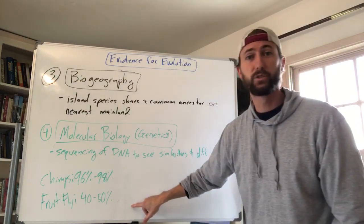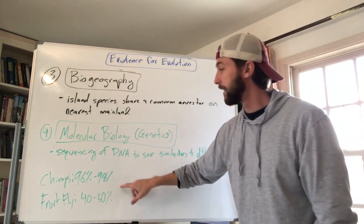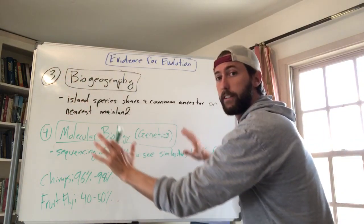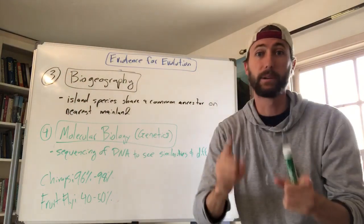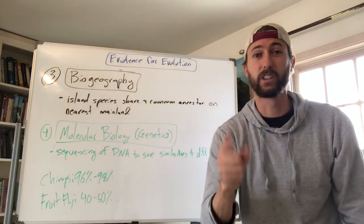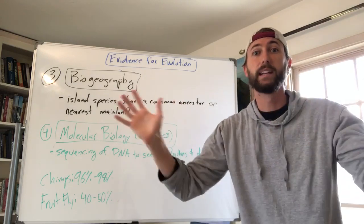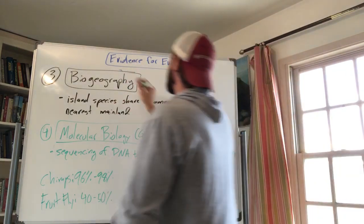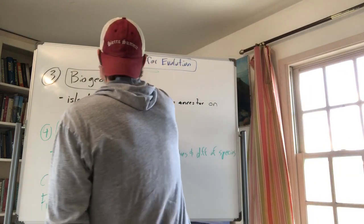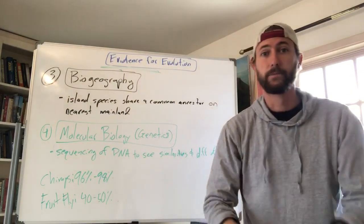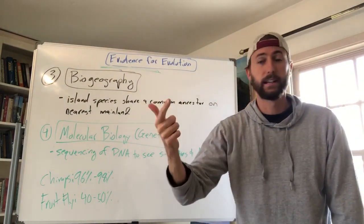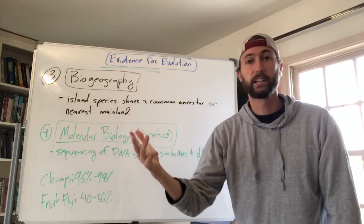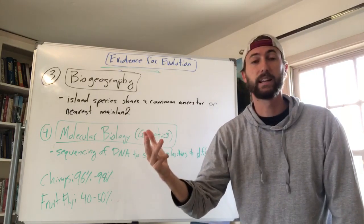Even bacteria share about 20 percent of their DNA with humans. All of this suggests that because DNA is so similar across species, if you follow the ancient tree of life all the way back to the beginning, we came from a common ancestor. Life started with some shared DNA and then began to mutate and change based on different environments. That is the evidence for evolution: fossil record, anatomy, biogeography, and molecular biology and genetics.